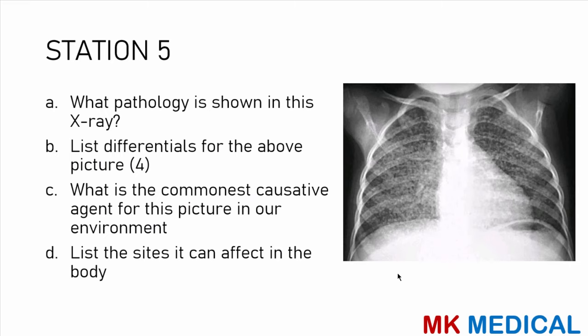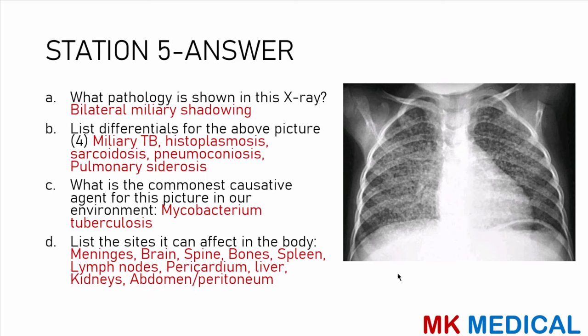Station 5: What pathology is shown in the X-ray? List differentials for the picture — about four. What is the most common causative agent for this picture in our environment? List the sites it can affect in the body. Looking at this image, you have bilateral miliary shadowing diffuse across both lungs. Differentials would be miliary TB, histoplasmosis, sarcoidosis, pneumoconiosis, and pulmonary siderosis.